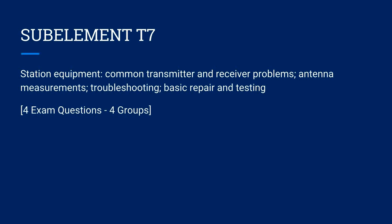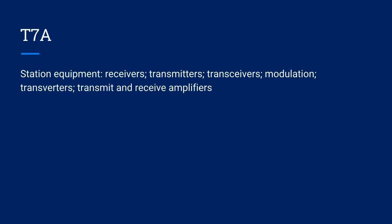Sub-element T7 covers station equipment, common transmitter and receiver problems, antenna measurements, troubleshooting, and basic repair and testing. There are four exam questions from the four groups in sub-element T7. First off, T7A, covering station equipment, receivers, transmitters, transceivers, modulation, transverters, and transmit and receive amplifiers.